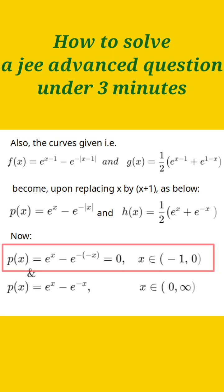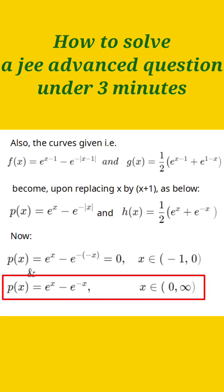Now p(x), if you focus on that, we say that when x is less than 0, mod x is minus x. So p(x) between minus 1 to 0 gives you 0 value, else it is e to the power x minus e to the power minus x from 0 to infinity.